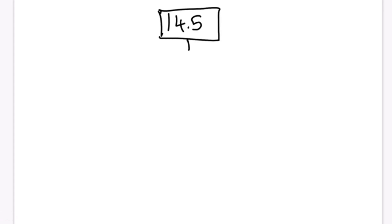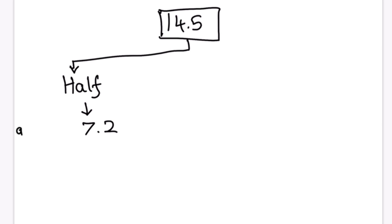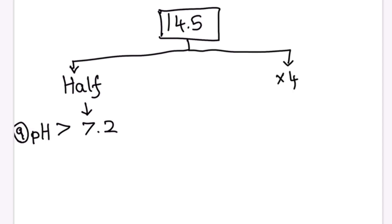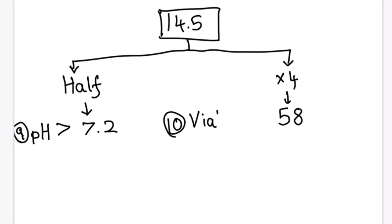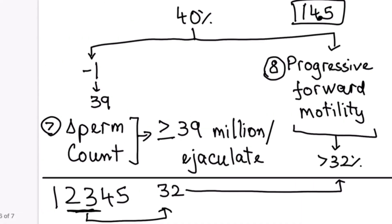The ninth parameter is pH. If you divide 14.5 by 2, you get 7.2, so the pH of the sample must be more than 7.2. The tenth parameter is viability: if you multiply 14.5 by 4, you get 58, so viability must be more than 58 percent.